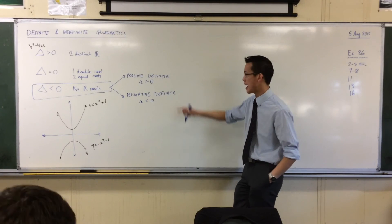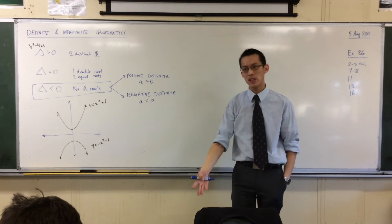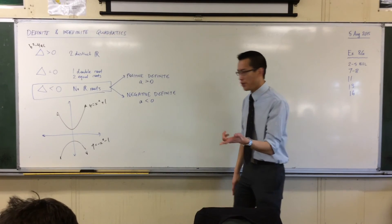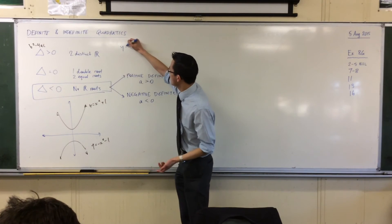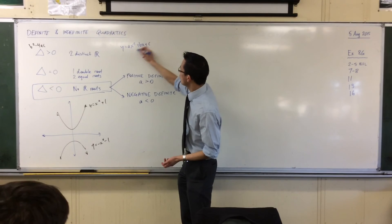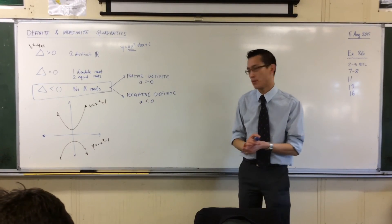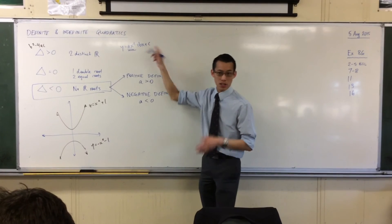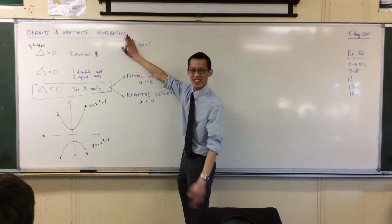We don't need to worry about an a equals zero case here, because if a equals zero, you lose your x squared term and you don't have a quadratic anymore — you get a straight line. You can lose the b and c terms and still have a quadratic, but without the x squared term, you just get a straight line.